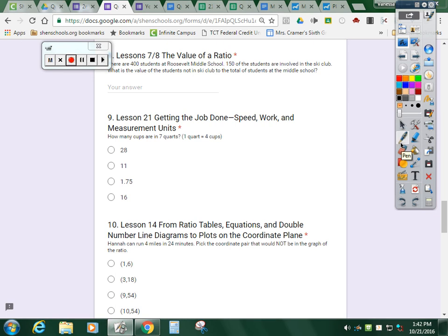This one kills me. There are 400 students total at Roosevelt Middle School. 150 of the students are involved in ski club. What is the value of students? I know value is a fraction of not in ski club to the total number of students at the middle school. I don't know how many kids are not in ski club. I have to actually subtract these two. When you subtract 150 from 400, you get 250 students that are not in ski club to the total of students, which is 400.